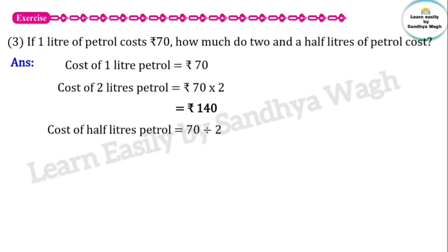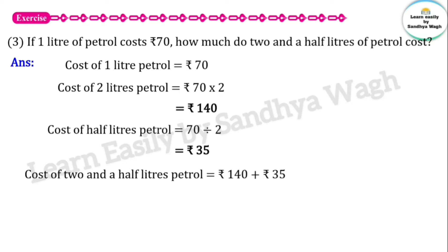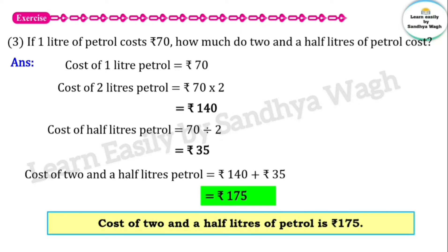The cost of half a liter of petrol is 70 divided by 2, which equals 35 rupees. We need the total cost of two and a half liters, so we add the cost of two liters and half a liter: 140 rupees plus 35 rupees. So the final answer is: the cost of 2 and a half liters of petrol is Rs. 175.